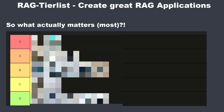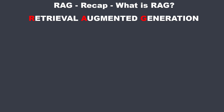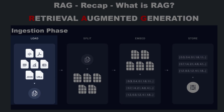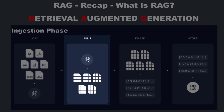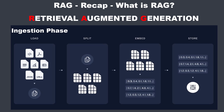Before we start with the tier list, a little recap about modern chatbots that make use of RAG — Retrieval-Augmented Generation. Before we can perform RAG, we first have to ingest the data into our vector store. We load the raw data into memory, split the data, and store it together with embeddings — numerical values representing the semantic meaning of documents — along with the raw documents in the vector store.